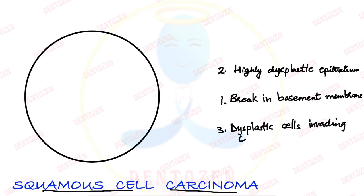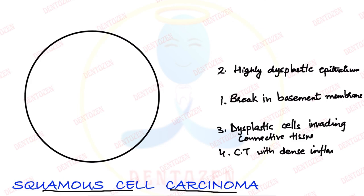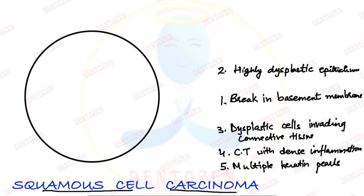We can see a lot of inflammatory cells in the connective tissue, and that is the next feature: connective tissue with dense inflammation. These dysplastic cells can form keratin which is arranged in concentric layers, and that is called keratin pearls. Multiple keratin pearls can be seen in the connective tissue and also within the epithelium.